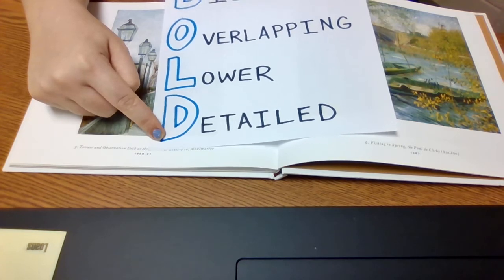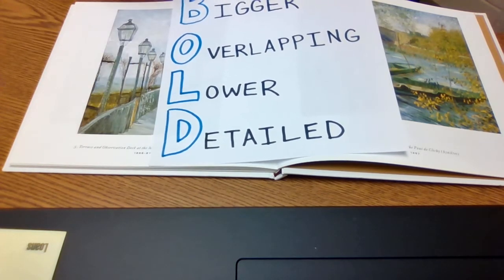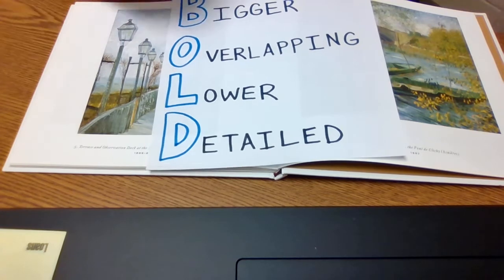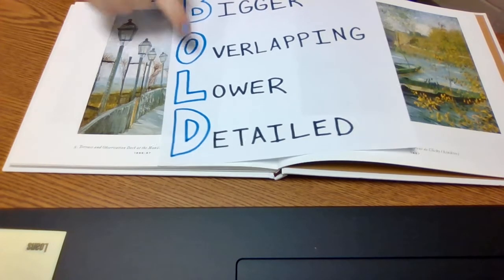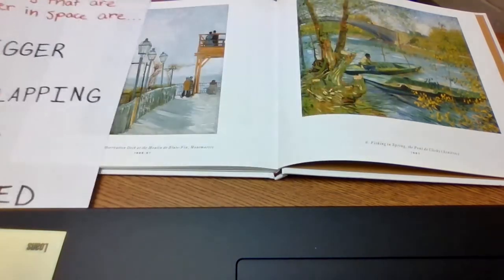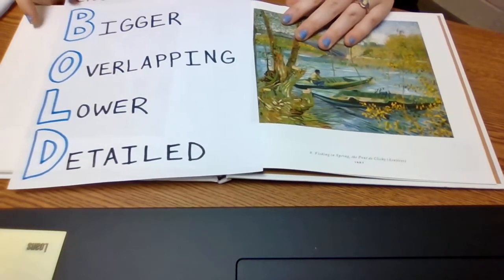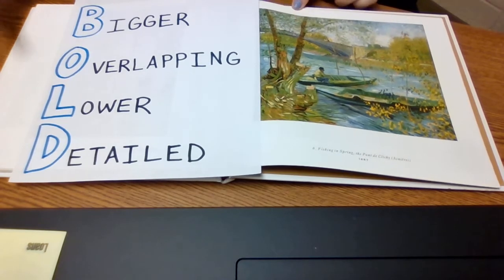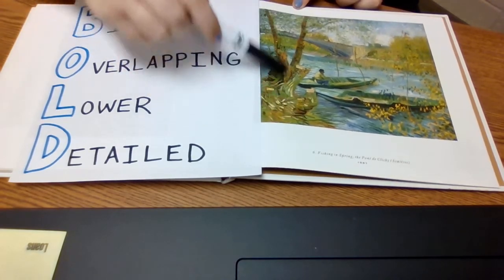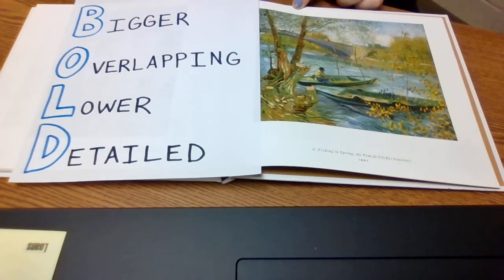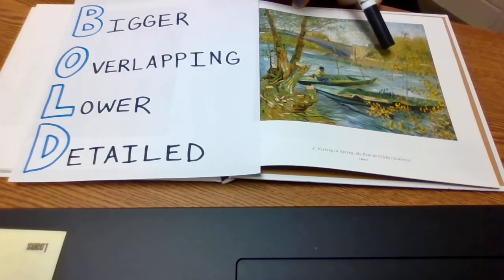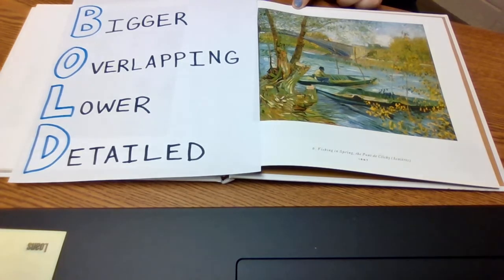There are only a few exceptions to this rule if your object happens to be floating in space or flying. But most of the time, you're going to see these four things. So, let's see if we can find them in this picture. Objects that are closer to us — we are talking about this tree right here. Objects that are closer to us are bigger on the paper. This tree is huge in comparison to these trees in the background. It takes up almost the entire paper.